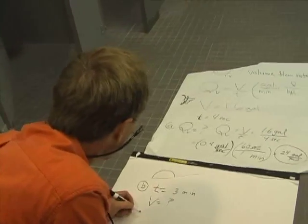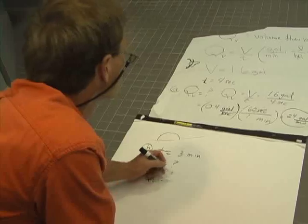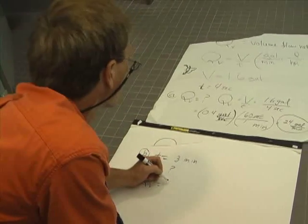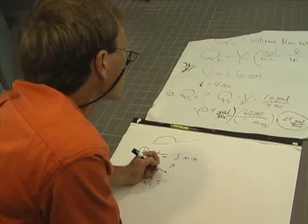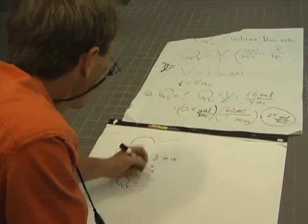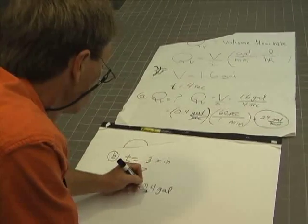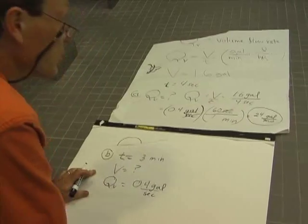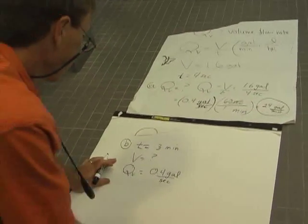So, how much volume would that be? Well, we know the volume flow rate is, let's see, I'm going to use 0.4 gallons per second. I could use 24 gallons per minute. Either way is fine.